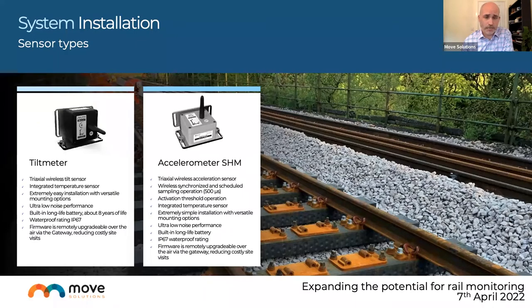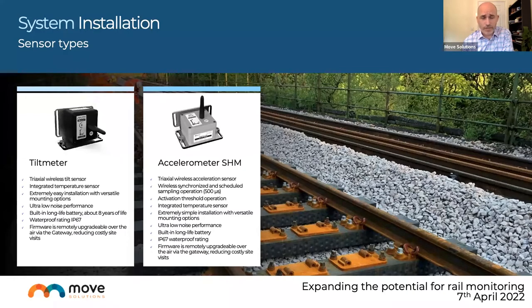This threshold approach allows us to establish, over the first day or two of installation, the white noise of the structure — whether from a passing train or the natural oscillation of the structure. All structures have a base level oscillation that doesn't need to be observed unless there are concerns over stability, and this presents significant data to filter. The smart functionality on the accelerometer means we're only presented with events that exceed a pre-configured threshold set via the cloud platform.